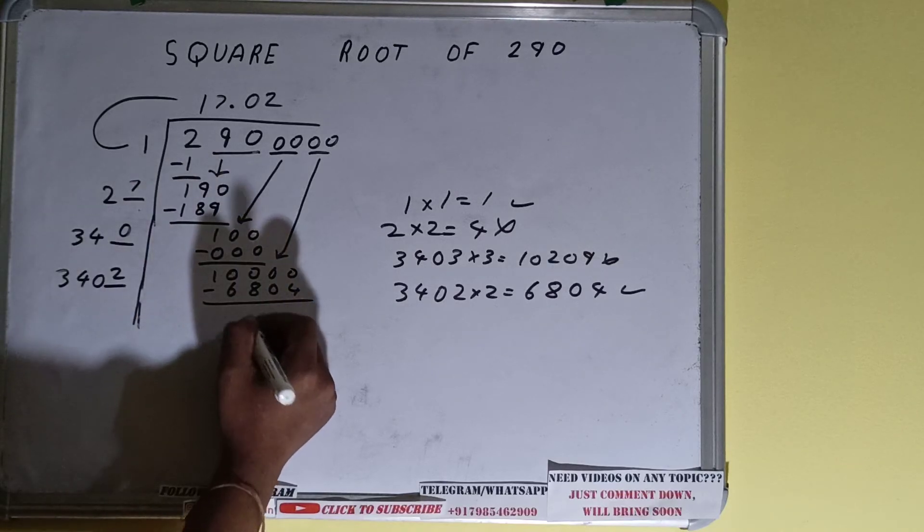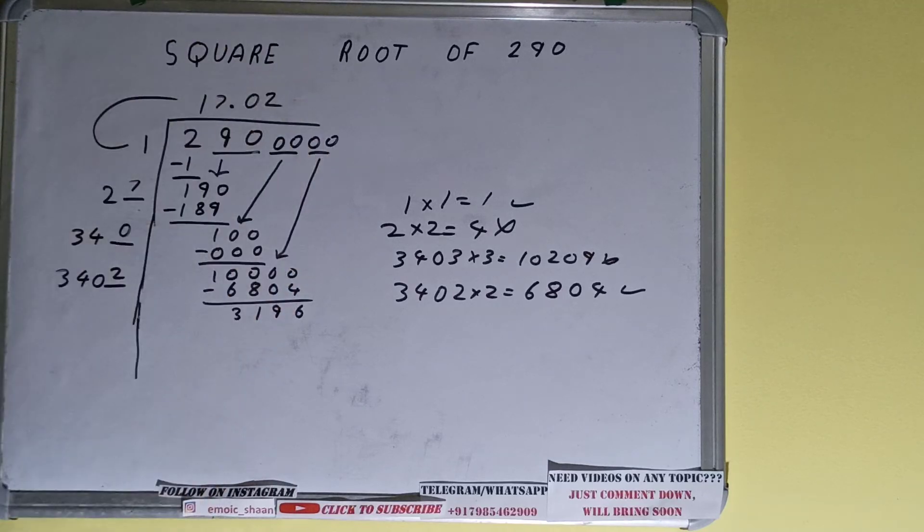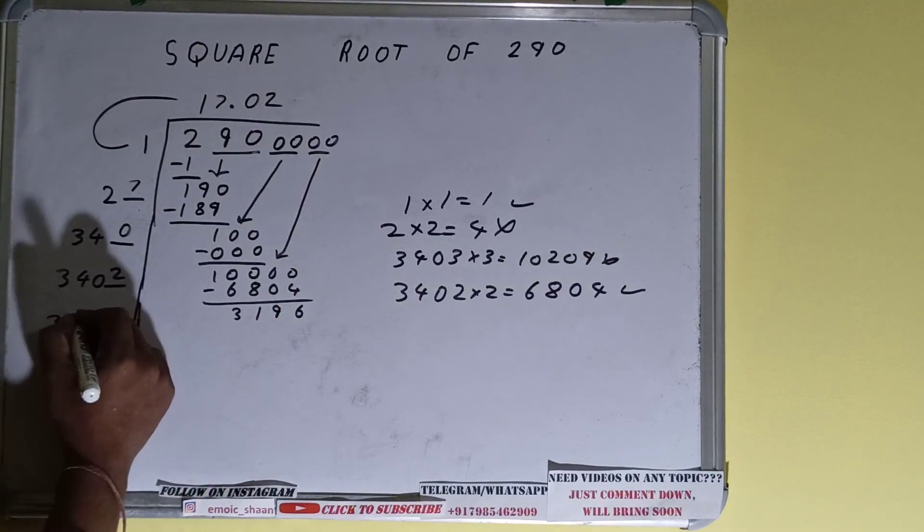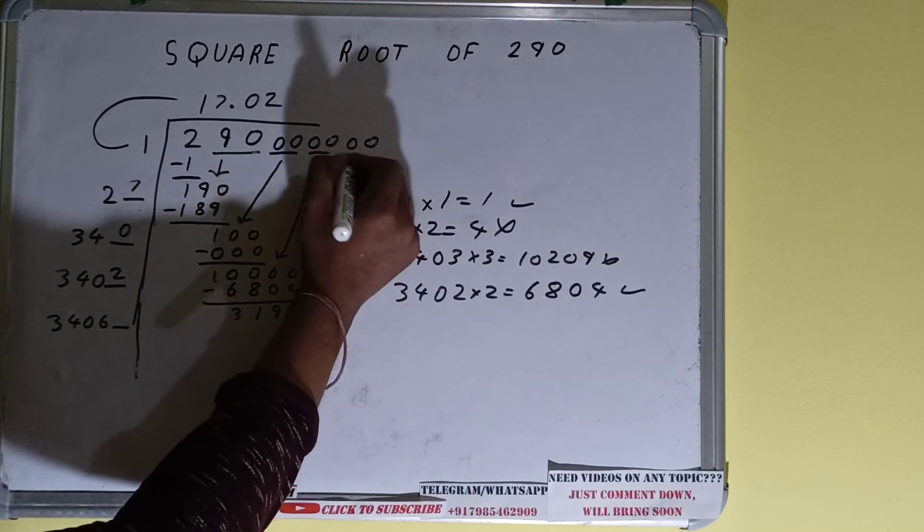And we'll be left with 3196. Now 3402×2 we did right, so add both. So 3402 plus 2 will be 3404 and keep one digit extra over here. Bring one more pair of zeros down.